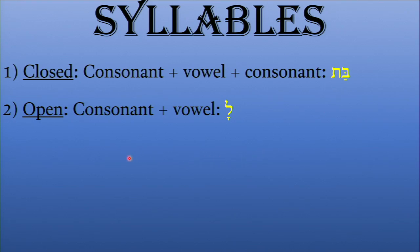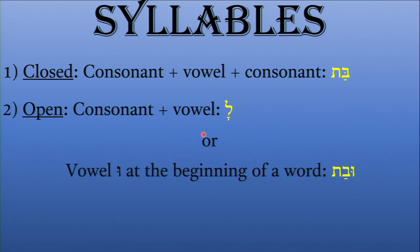There are also open syllables within words — these consist of a consonant and then a vowel, so it remains open. Note that sometimes we'll see the letter U, the Shuruk, appearing at the beginning of a word, and in that case we'll just consider the Shuruk as a syllable in its own right. We'll see this when we start reading the text more.